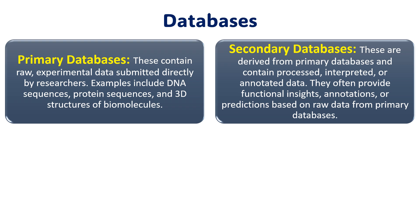The primary database can also be called an archival database, since it archives the experimental results submitted by scientists. It is populated with experimentally derived data like genome sequences and macromolecular structures. The data entered here remains uncurated — no modifications are performed over the data. It contains a unique set of data units obtained from the laboratory, made accessible to normal users without any changes. Examples include DNA sequences, protein sequences, 3D structures, and biomolecules.